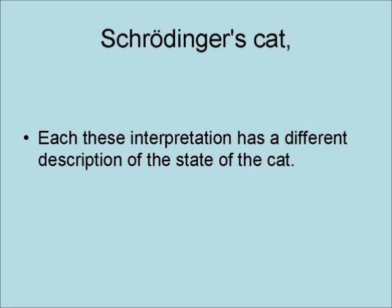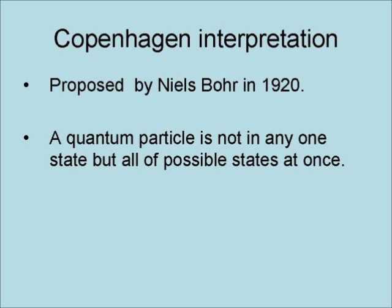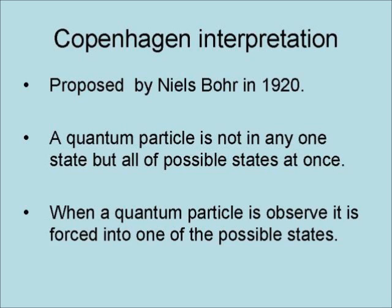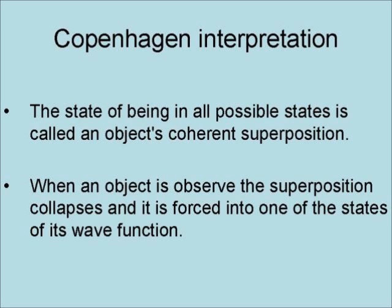Each of the following interpretations has a different description of the state of the cat. The Copenhagen interpretation of quantum mechanics was proposed by Niels Bohr in 1920. According to this interpretation, a quantum particle is not in any one state, but exists in all possible states at once. When a quantum particle is observed, it is essentially forced into one of the possible states — the state that is actually observed. The fact that it may be forced into a different state each time explains why quantum particles behave erratically. The state of being in all possible states is called an object's coherent superposition. When an object is observed, the superposition collapses and it is forced into one of the states of its wave function.